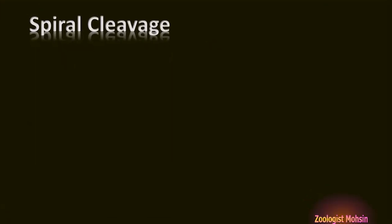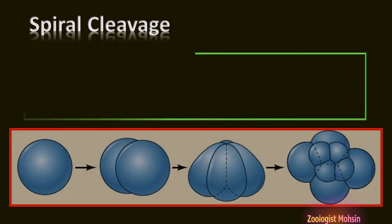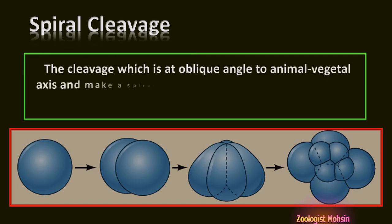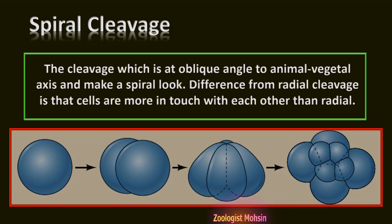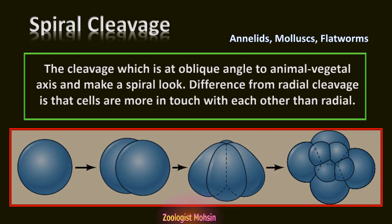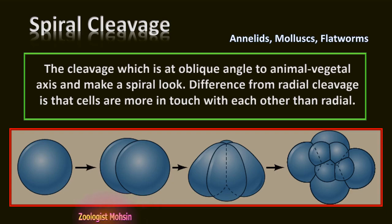Spiral cleavage: This cleavage occurs at an oblique angle to the animal-vegetal axis and produces a spiral appearance. The difference from radial cleavage is that cells are more in contact with each other. Examples include annelids, molluscs, and flatworms. Spiral cleavage produces layers of cells which look like loops of a spring lying on top of one another, with blastomeres of equal size on each layer, and each layer appearing distinct from those above and below.